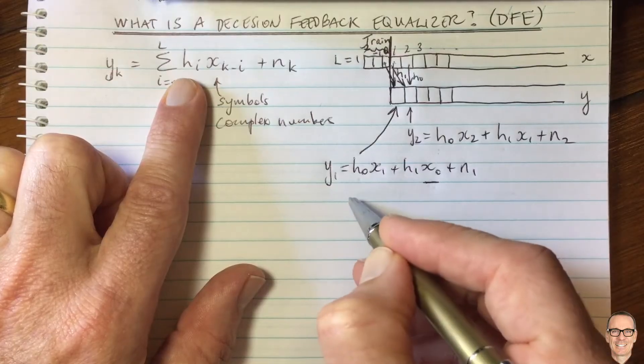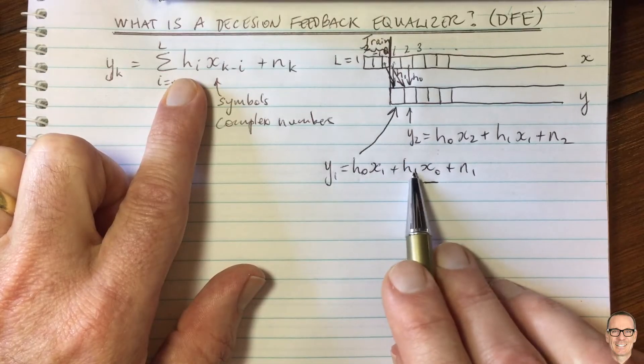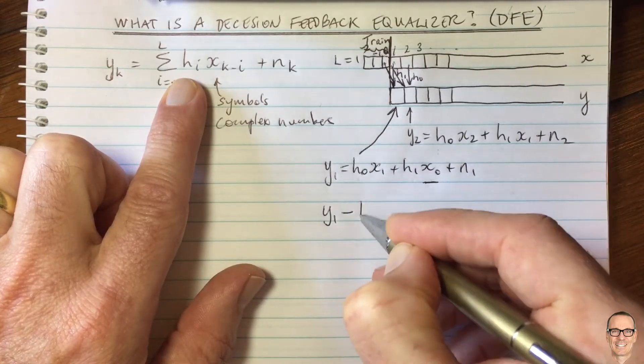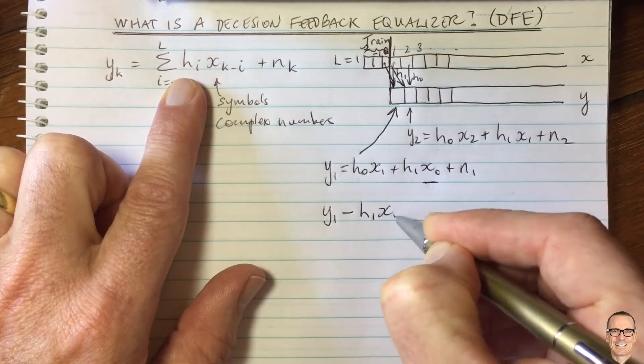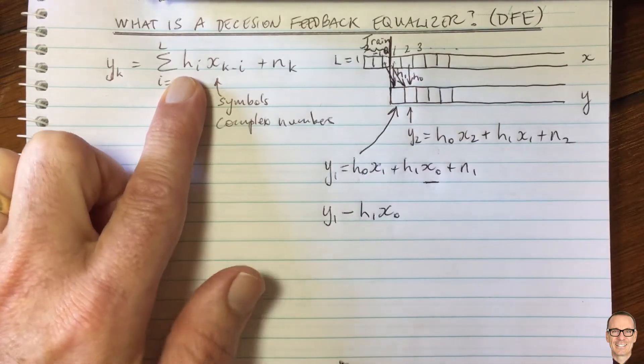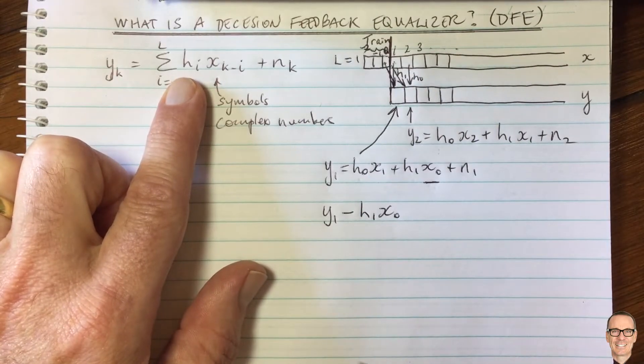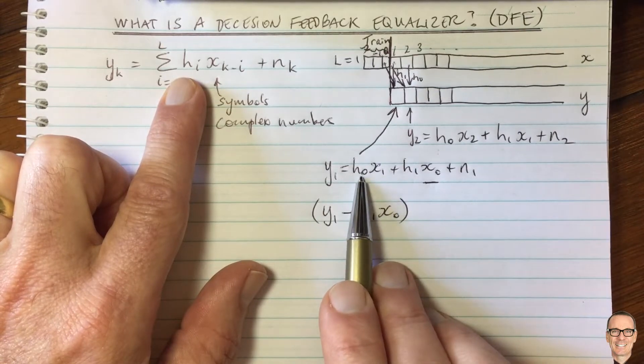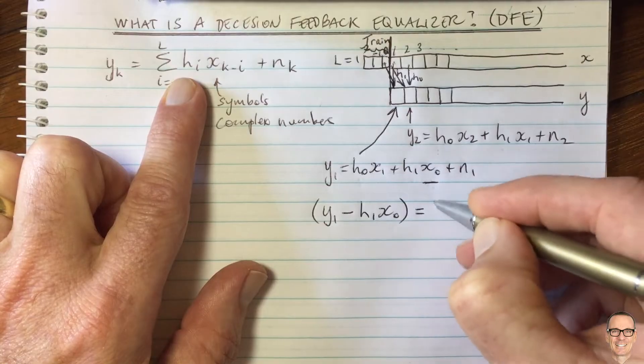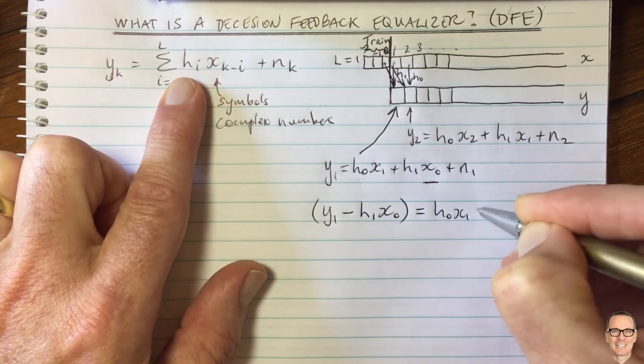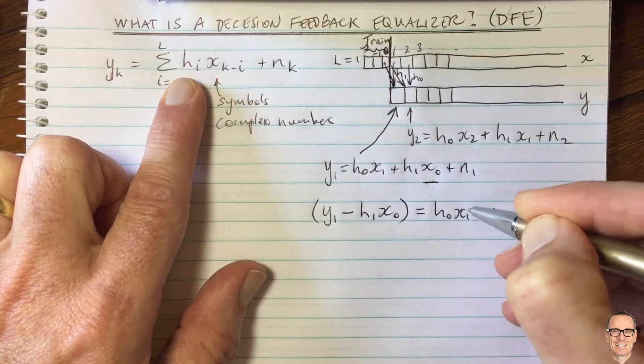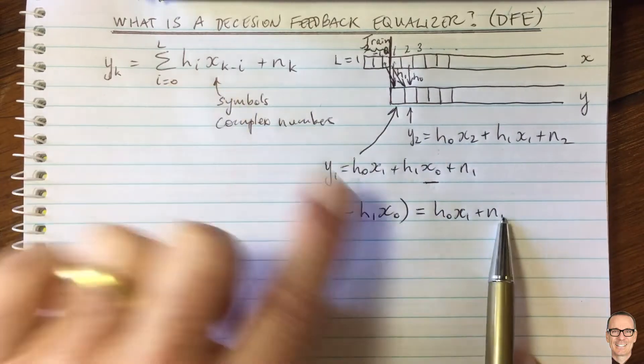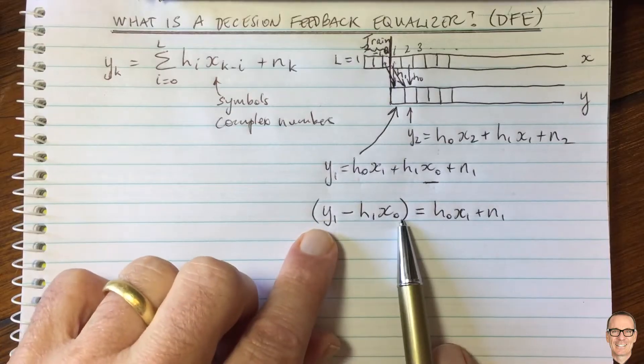And so what we can do is we can subtract h1 times x naught from the measurement. So we take our measurement, y1, we subtract h1 times x naught, because we know what x naught is as part of our training. And then this gives us something that we could then divide by h naught. Well, let me just write down what that is. That then equals, of course, h naught x1 plus n1.